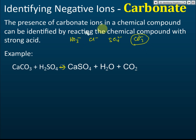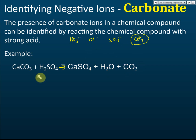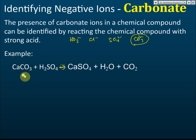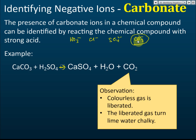If it's nitrate — no reaction. Chloride — no reaction. Sulfate — no reaction. But if it's carbonate, it will react with acid to produce salt, hydrogen gas, and carbon dioxide gas. You can see effervescence and a colorless gas released. You then test the colorless gas using lime water — if it turns lime water chalky, this confirms it's carbonate. Observation: colorless gas is liberated and turns lime water chalky.